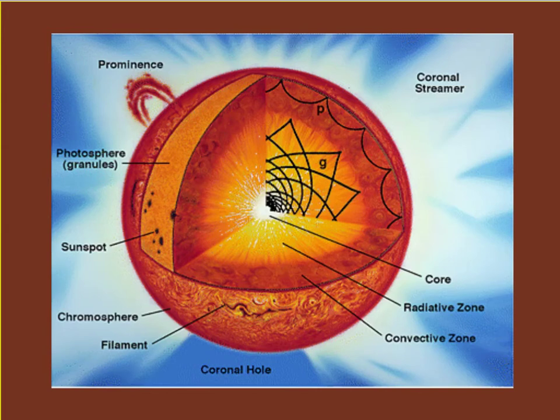So diagram to review. Photosphere, we have the yellowish layer. We have our sunspots, our darker, cooler spots. Our chromosphere is the reddish layer. Here's the corona.